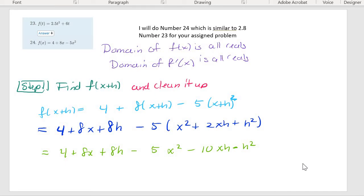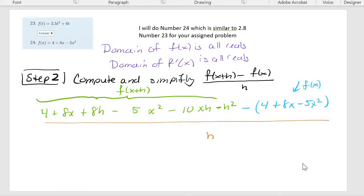Next, you put it into the ratio. So f of x plus h is that green thing I just did on the previous page copied over. This is f of x. Put those parentheses up.